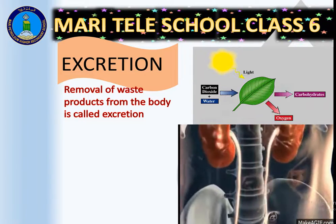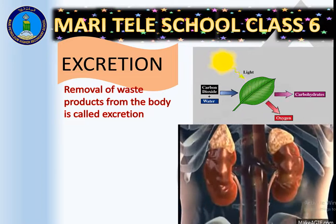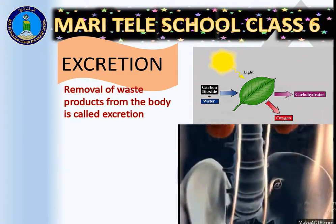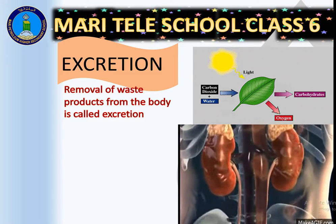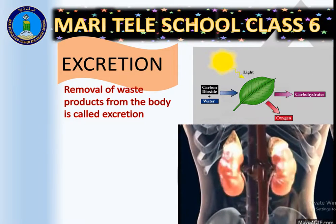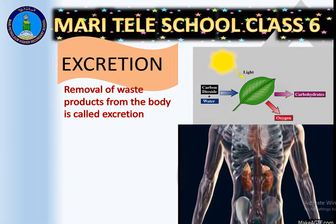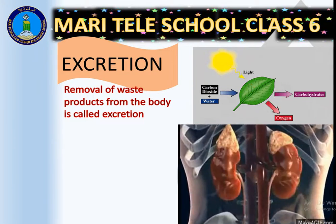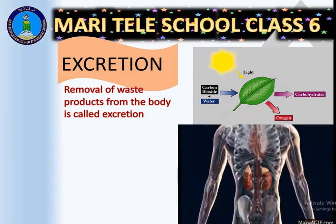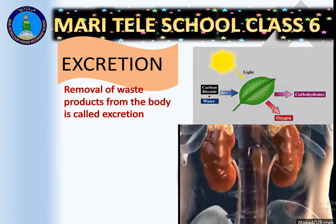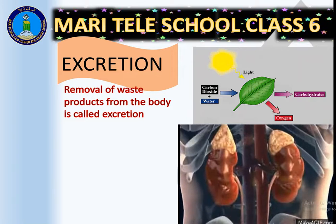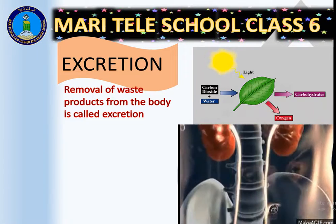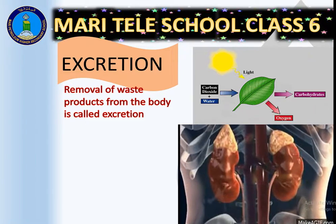In animals and humans there are special excretory organs. The kidneys and the excretory system filter the blood and remove waste products in the form of urine. After digestion, waste products are removed, and gases like carbon dioxide and excess water are also removed. Animals have well-developed excretory systems with special organs for the excretion process.